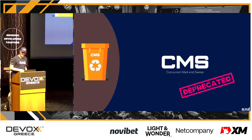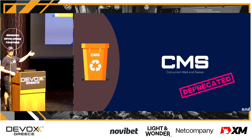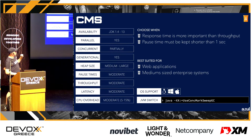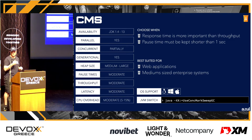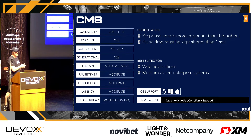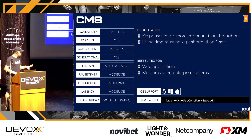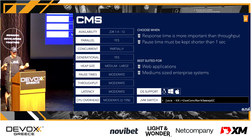CMS — Concurrent Mark and Sweep — is deprecated and was removed in JDK 14. It was only partially concurrent, not fully. Response time was prioritized over throughput, making it good for snappy application response. It was deprecated in JDK 9 and removed in JDK 14. If you're on JDK 11 or below you could still use it, but I wouldn't recommend it. It was available since JDK 1.4 and did a good job, but had some problems — which is why G1 replaced it.